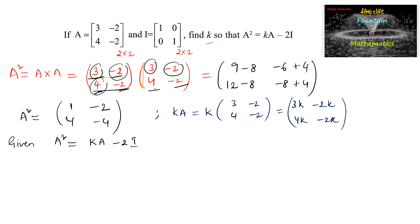And 2I is equal to, we can write 2I as 2, 0, 0, 2. 2 is multiplied to each and every element of identity matrix 1, 0, 0, 1.